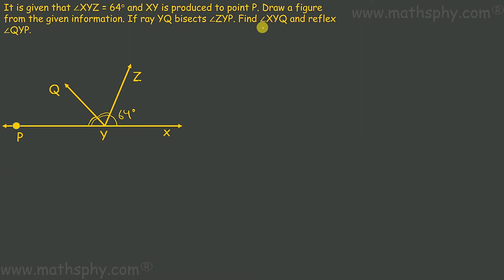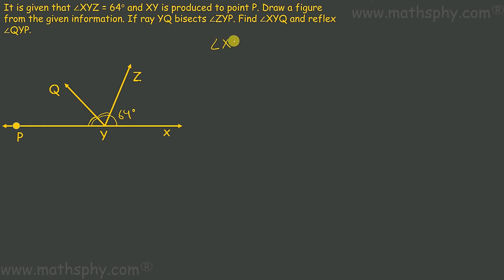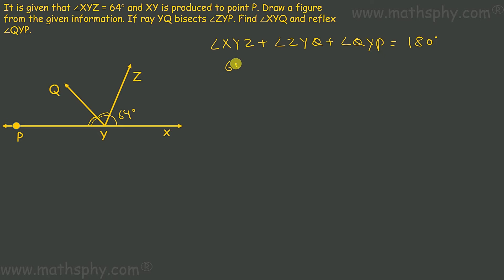Angle XYQ means this angle you have to find out, and the reflex of QYP. I'll write: angle XYZ plus angle ZYQ plus angle QYP together they are 180 degrees, as they are on the straight line XP which has been made by extending XY to point P. XYZ is 64 degrees, plus ZYQ plus QYP.